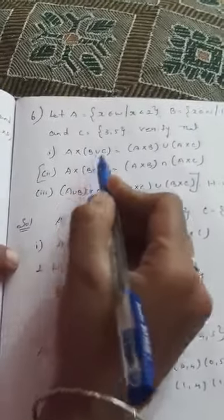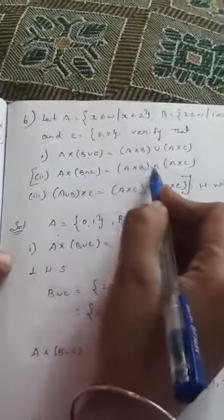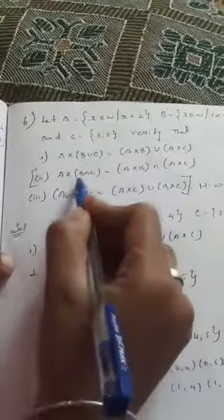Now your second sum and third sum is your homework sum. Second sum and third sum is homework. Same type. Instead of union, it is intersection. First find this one. Same model. Do it as your homework. Thank you.